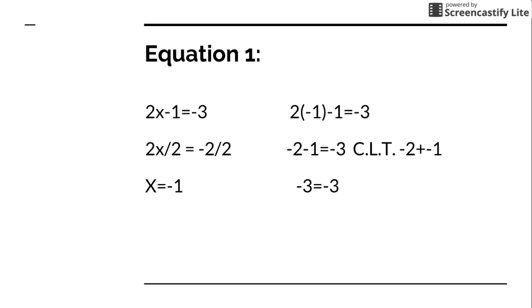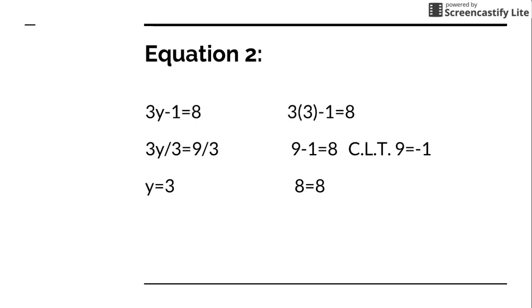Now you gotta double check to make sure that it's right. You substitute negative 1 for x in the equation. Multiply by negative 1 to get negative 2. Negative 2 minus 1 is gonna be negative 3. Now on to the next one, 3y-1 is gonna be equal to 8. But first you gotta add 1 to both sides to isolate the variable.